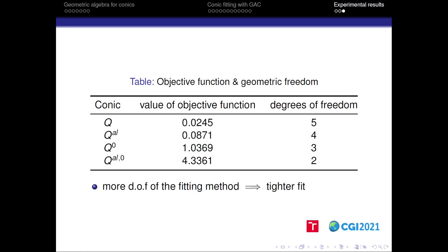In this table, we can see the relationship between the type of the fitted conic, the tightness of the fit represented by the value of objective function, and corresponding degrees of freedom of the particular fit. We can generally say that the more degrees of freedom the fitting method has, the tighter the fit produced is. It corresponds to the fact that the value of the objective function decreases as the number of degrees of freedom increases.